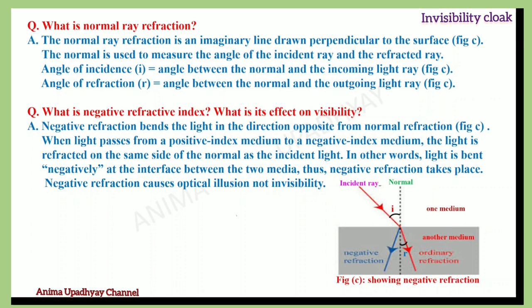What is negative refractive index and what is its effect on visibility? The negative refractive index causes optical illusion but not invisibility. In negative refraction, light is bent in the direction opposite from normal refraction. When light passes from a positive index medium to a negative index medium, the light is refracted on the same side of the normal as the incident light — in other words, light is bent negatively at the interface between the two media. In the figure, the blue ray takes the same direction as the incident ray, demonstrating negative refraction.